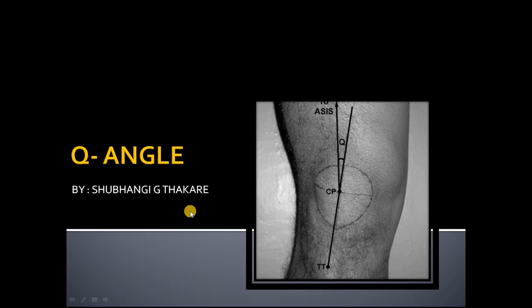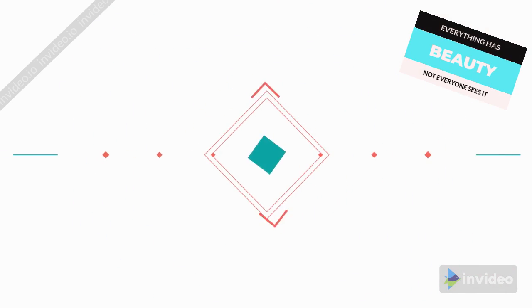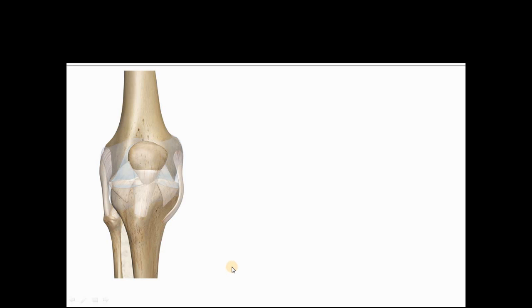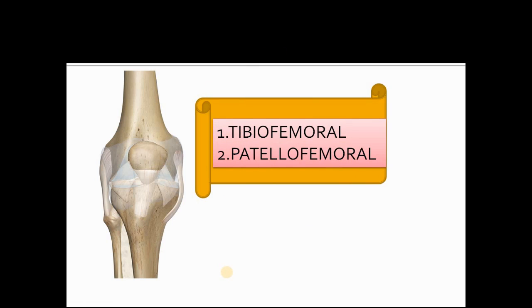First of all, let's learn about some basic anatomy and biomechanics. As I said in my previous video on the knee joint, the knee complex is made by two joints: the tibiofemoral and the patellofemoral joint. As we have to learn about Q-angle, we should have some basic idea of the patellofemoral joint.